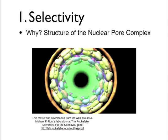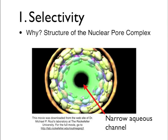Those proteins are characterized by having FG repeats — that is, phenylalanine and glycine sequences repeated several times in their structure. Those proteins with FG repeats exhibit a very disorganized shape, and the fact that those repeats are rich in phenylalanine and glycine makes them very hydrophobic. This causes the spaghetti-like structures formed by these proteins to produce a narrow aqueous channel in the middle of the nuclear pore complex, while simultaneously producing a hydrophobic environment toward the rim.